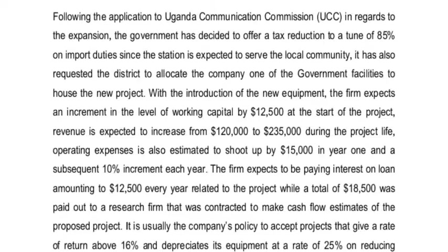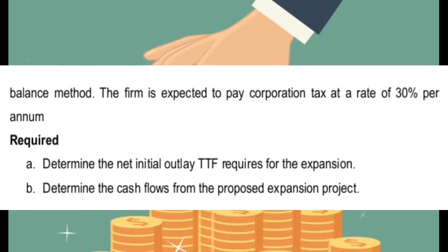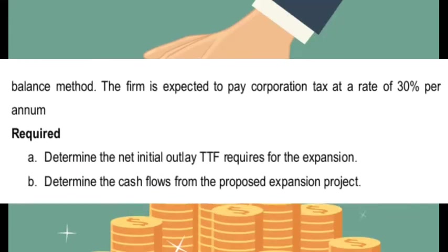Revenue is expected to increase during the life of the project. Expenses are also expected to increase by $15,000 in year one with a subsequent 10% increment each year. The firm expects to pay interest on a loan of $12,500 every year related to the project. A total of $18,500 was paid out for research — that is a sunk cost. The required rate of return is 16%, the depreciation rate is 25% on the reducing balance method.